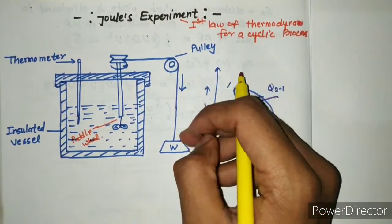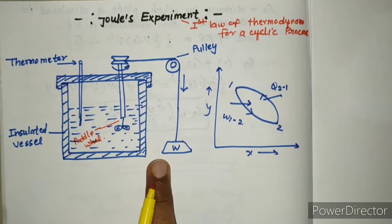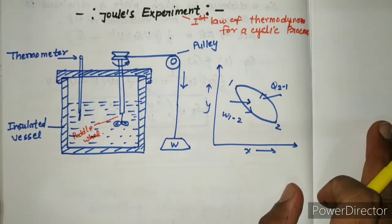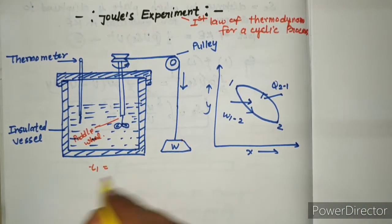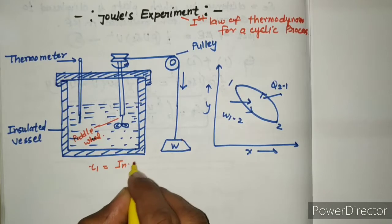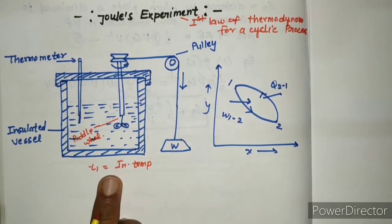The mass rotates the paddle wheel by pulling. Let the initial temperature be T1. This is called the initial temperature of water before doing work.